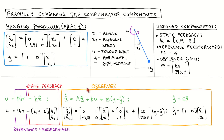The task of the observer is to estimate the plant states. These estimated states are called X hat. The observer combines two mechanisms: simulation and correction. The observer simulates the plant behavior, which we can see from the fact that this part looks the same as the plant state equation. The state estimates are corrected by adding the difference between the measured and predicted outputs multiplied with the observer gain.